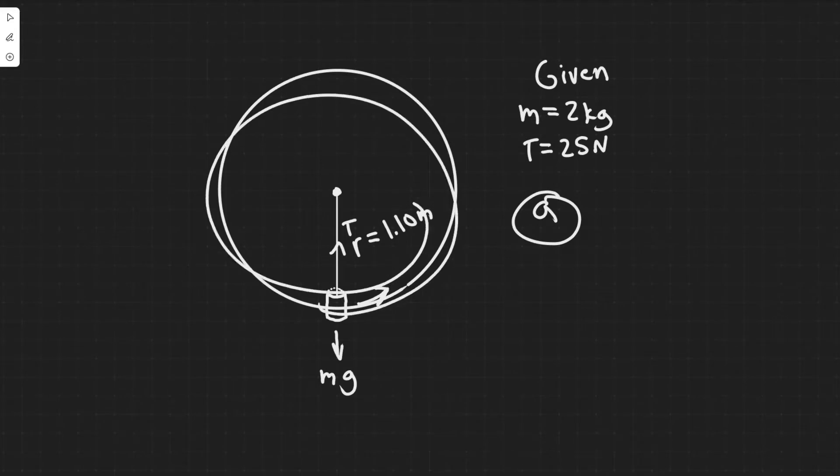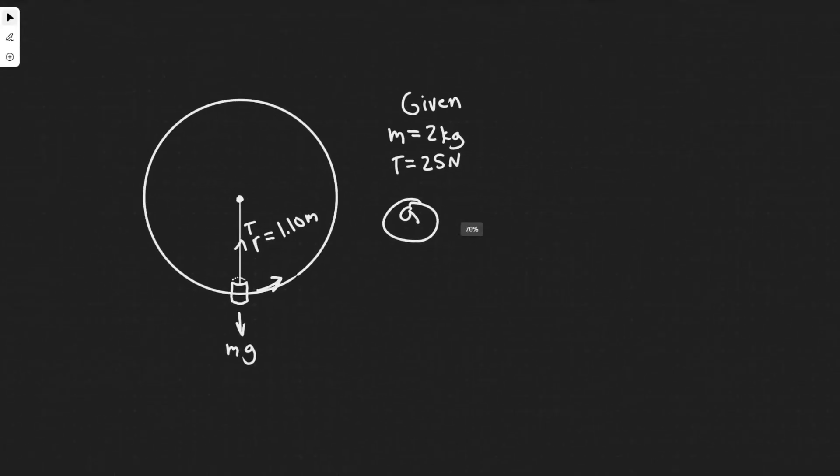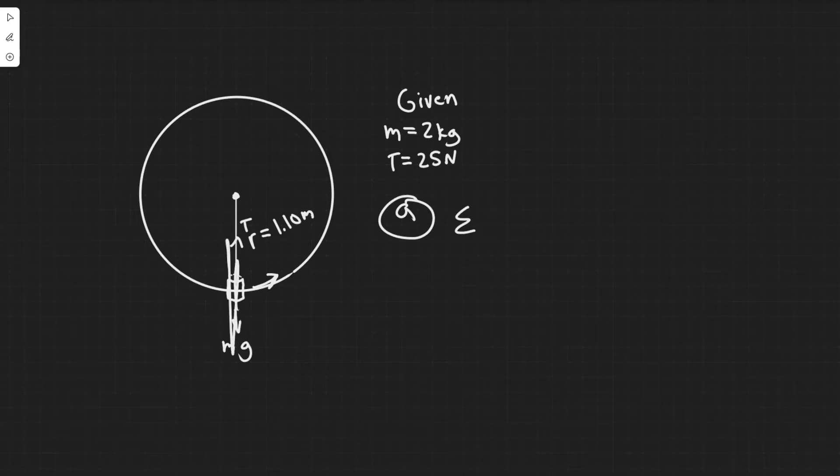So these are the two forces. Since we're going in a circle, we're going to sum the forces in the y direction, and it's going to be equal to m*a_R, where a_R is the centripetal acceleration. So the two forces are tension and gravity. If up is positive and down is negative, we have tension minus mg because it's going down.